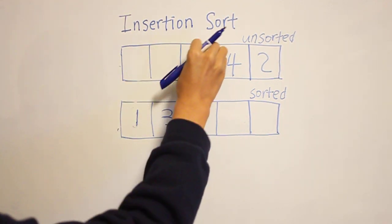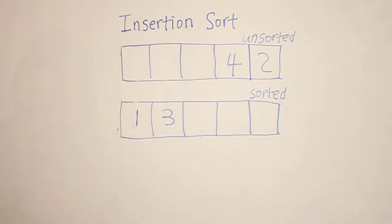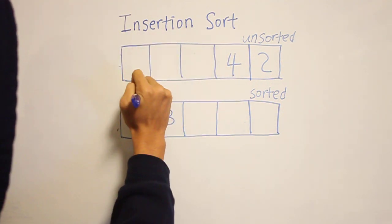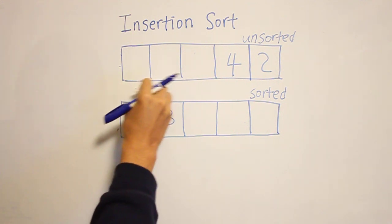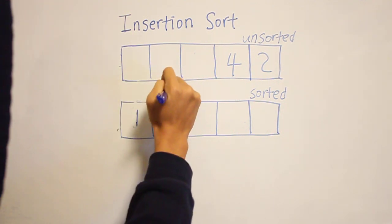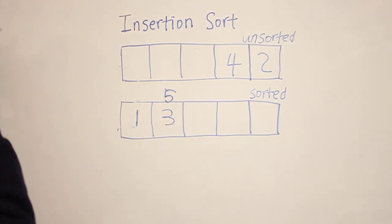We take five, and we always start from the first element. We compare it to one, and since five is bigger than one, we move it to the next place, and it's also bigger than three, so you put it here.